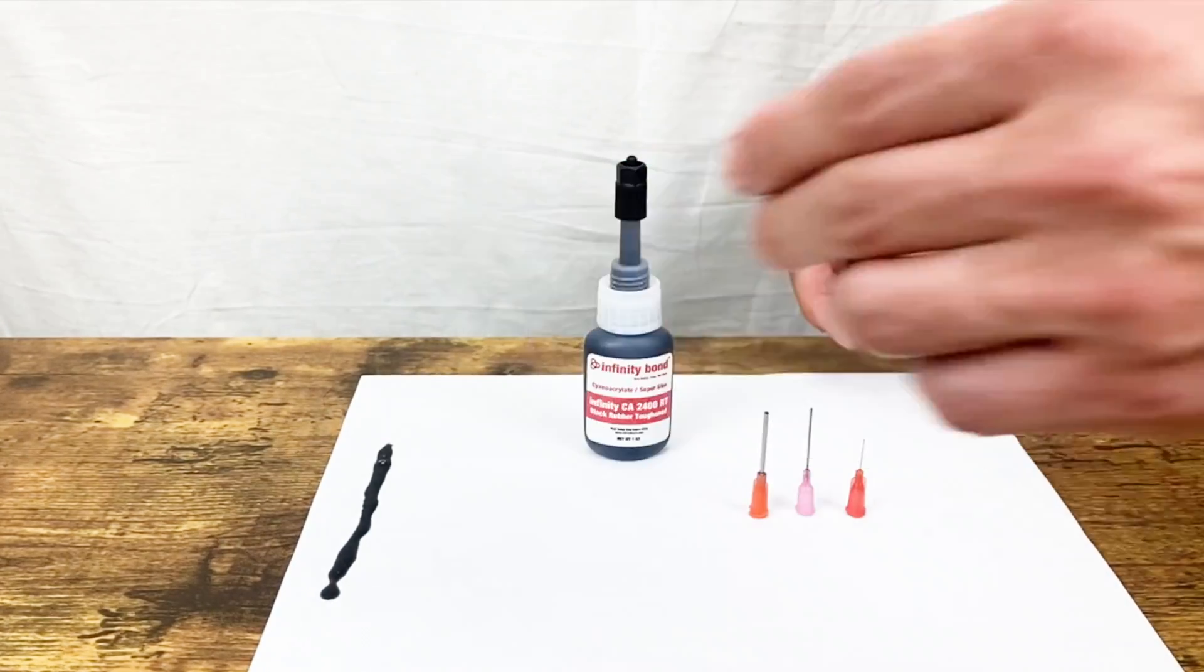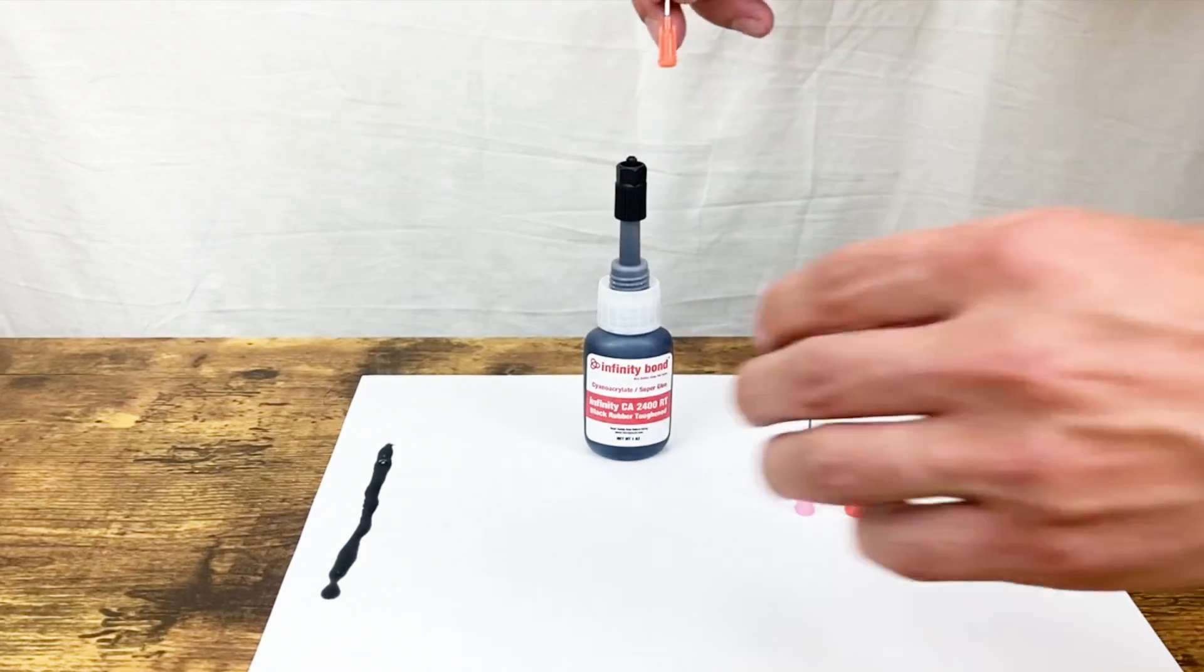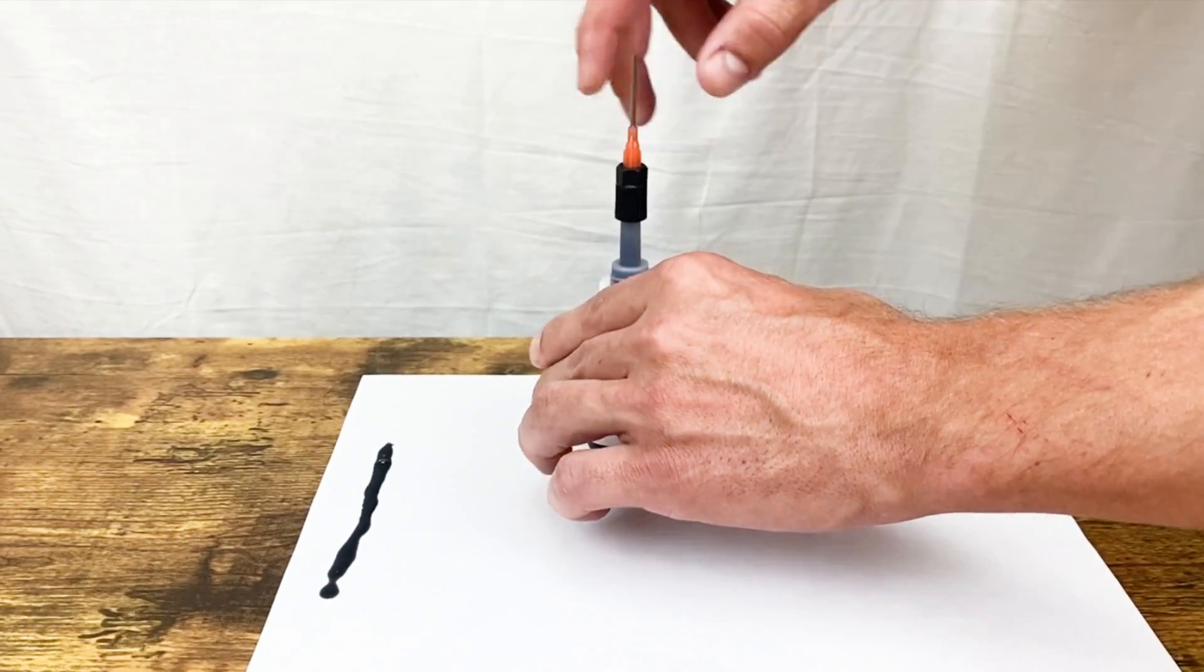Twist the lure lock until it is firmly in place, and then simply twist your desired needle size to create a locked connection.